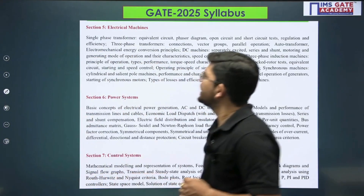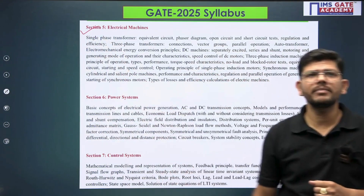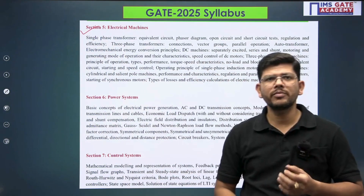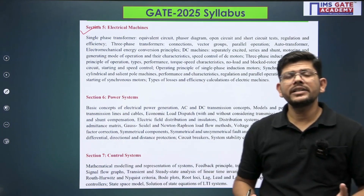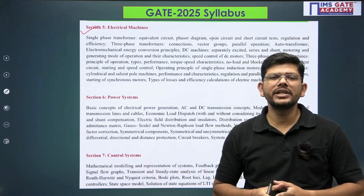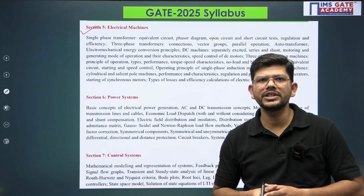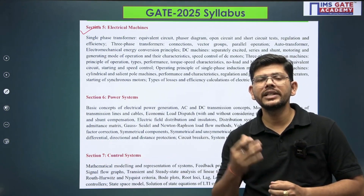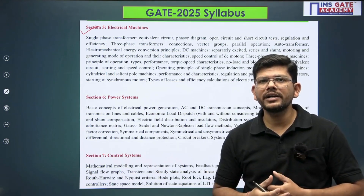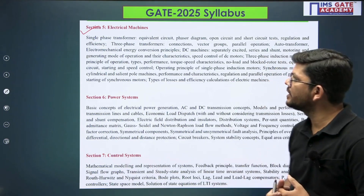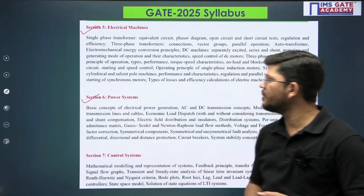In section number five, we have Electrical Machines. You will be covering single-phase transformers, three-phase transformers, single-phase and three-phase induction machines, DC machines, and synchronous machines — both motors and generators. These are all included in section number five. In section number six, we have Power Systems.